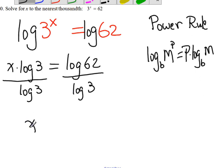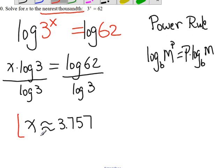x is approximately equal to 3.757. I keep three decimal places because the question wants us to round to the nearest thousandth. This is your final answer.